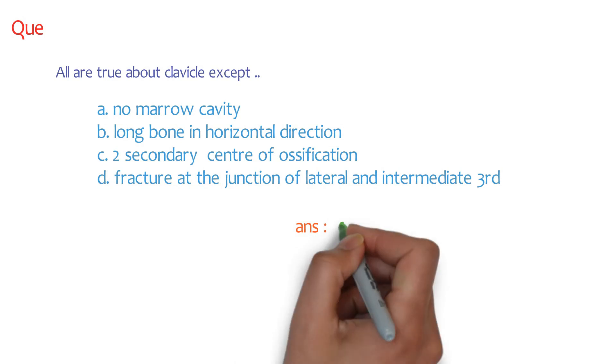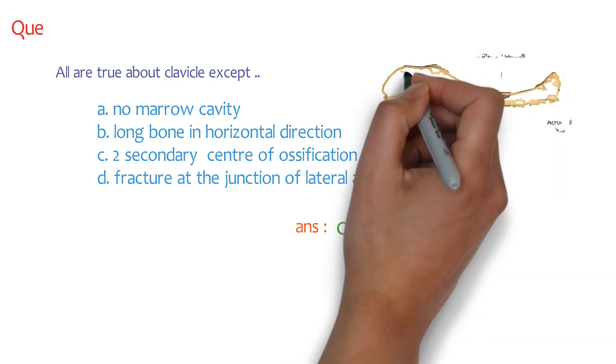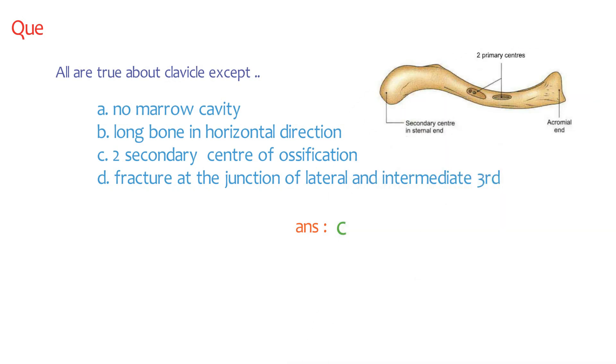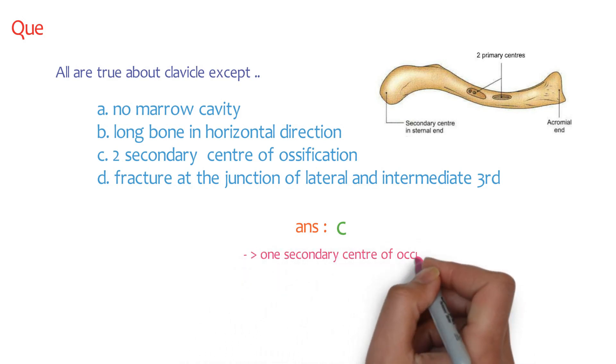Yes, and the answer is the third one. We have only one secondary center of ossification, which is present on the medial side at the sternoclavicular joint. Look over here, here we have the secondary center of ossification. And remember that we have two primary centers of ossification. Two primary centers of ossification and only one secondary center of ossification.